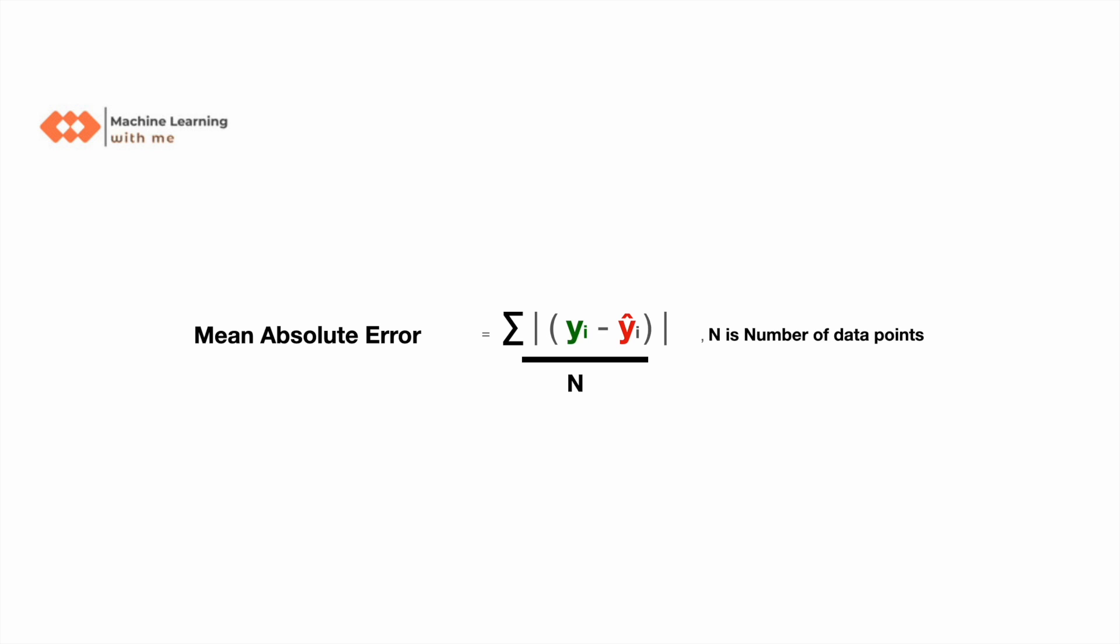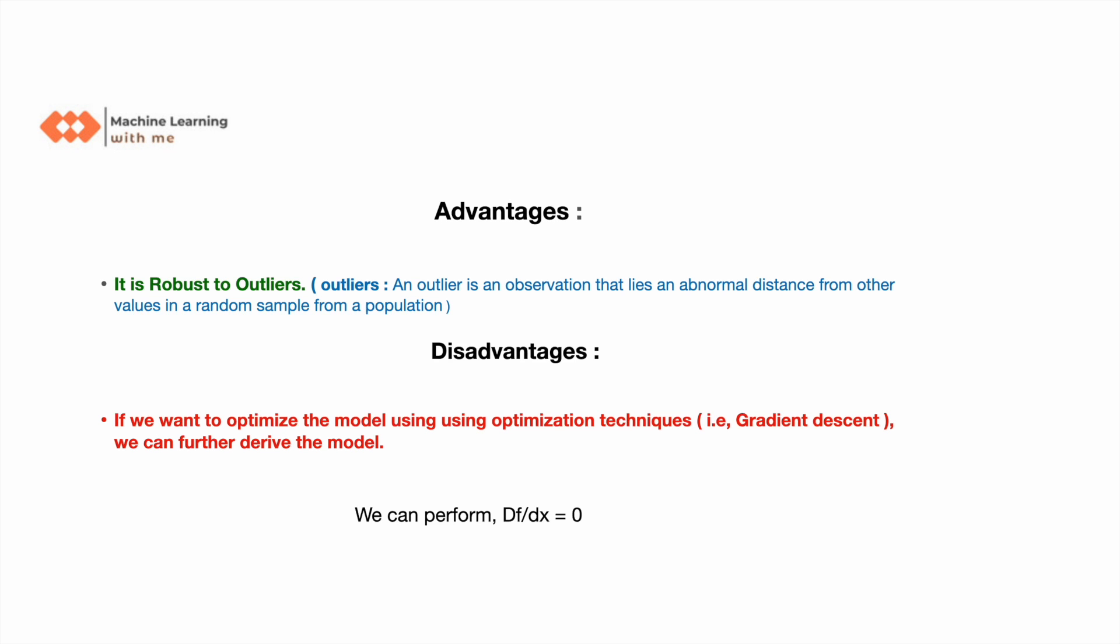Now let's see advantages and disadvantages of Mean Absolute Error. The main advantage is that it is robust to outliers. Now, what is an outlier? An outlier is an observation that lies an abnormal distance from the other values in a random sample from a population.